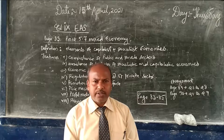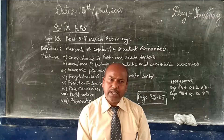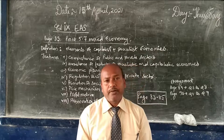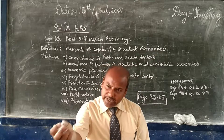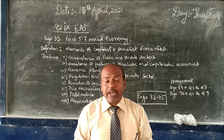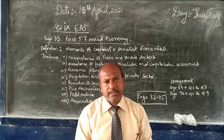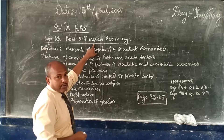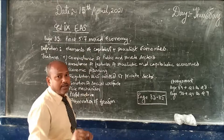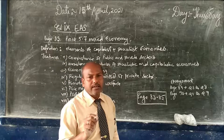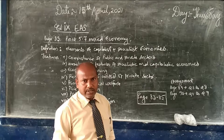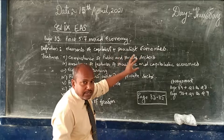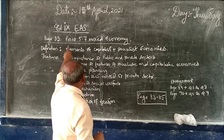There are some economies that neither adopt the socialistic pattern nor the capitalistic pattern. They have chosen the best elements of socialism and the best elements of capitalism and mixed them together. When mixed, they get a third type of economy which is called a mixed economy. Mixed economy combines the elements of the socialist and capitalist economy.